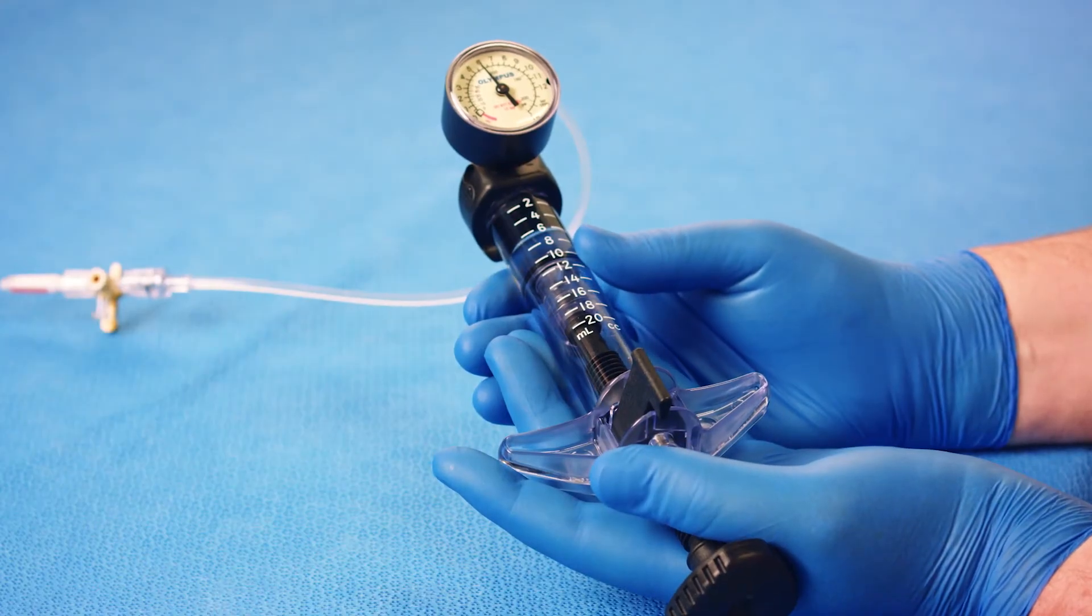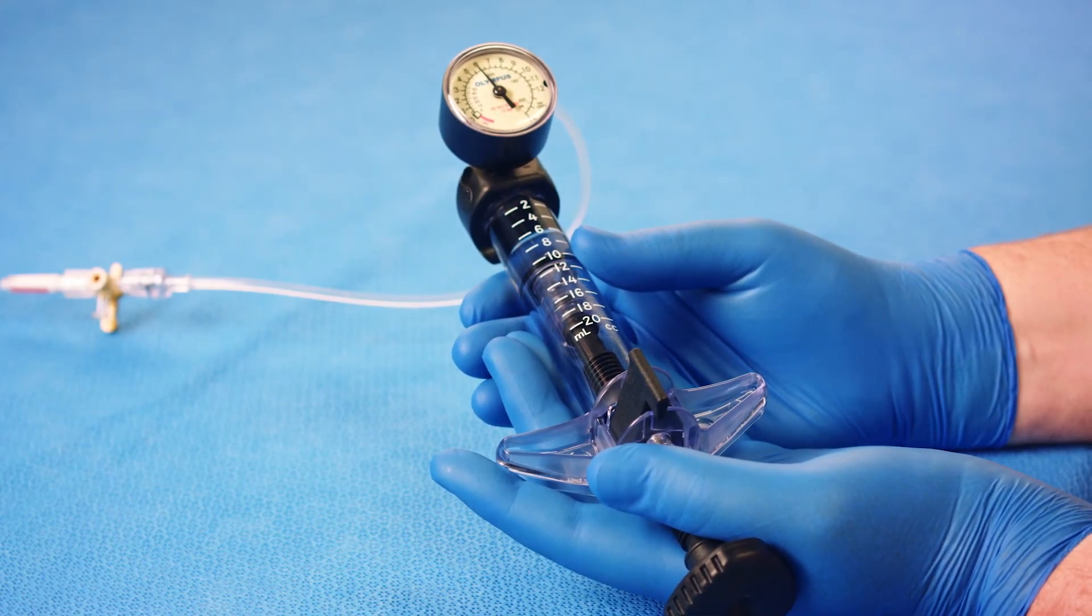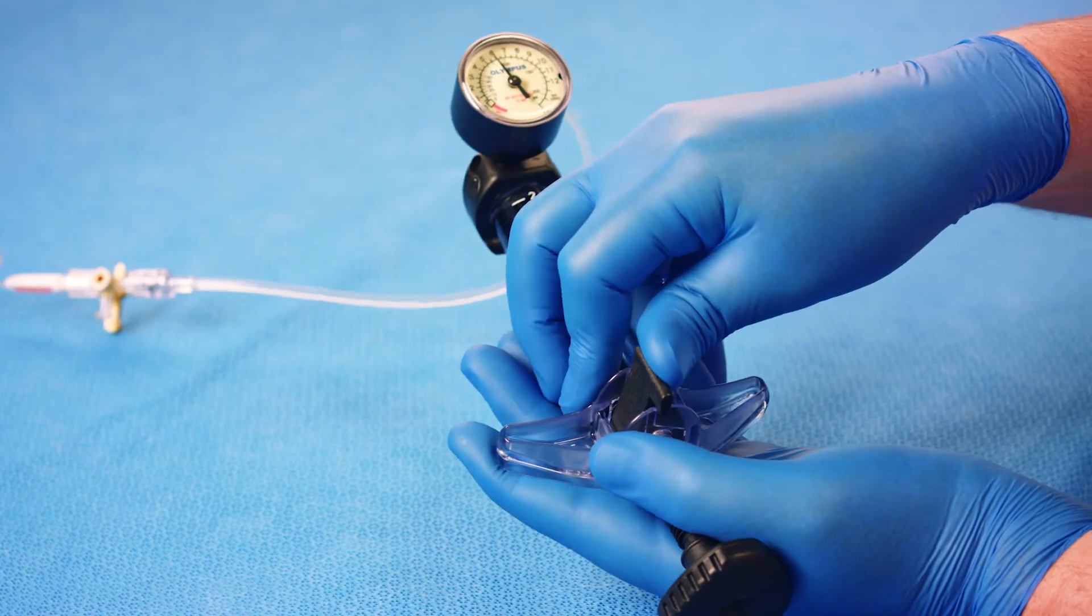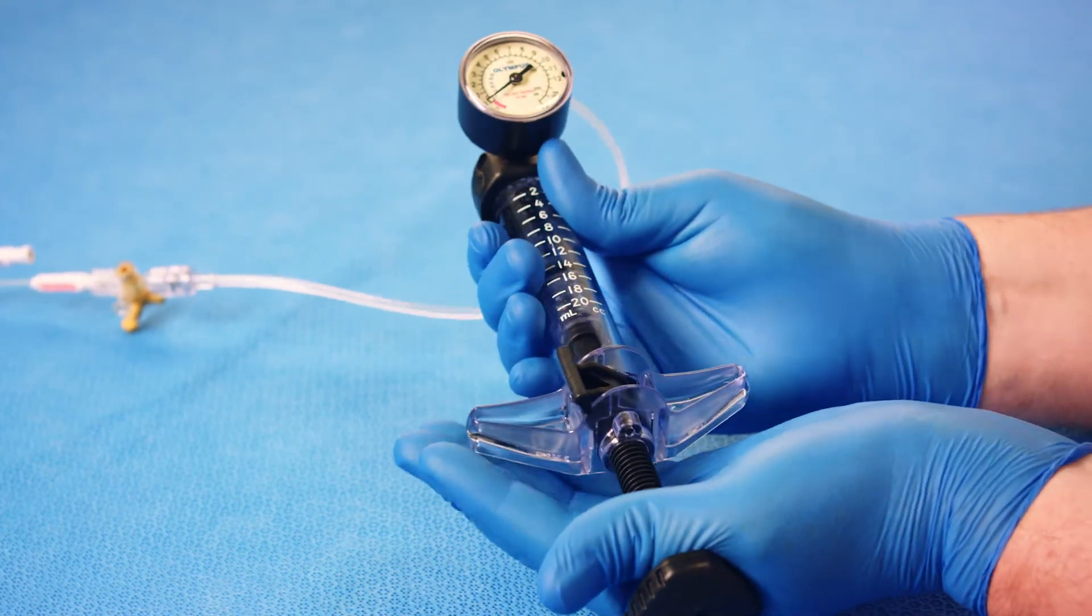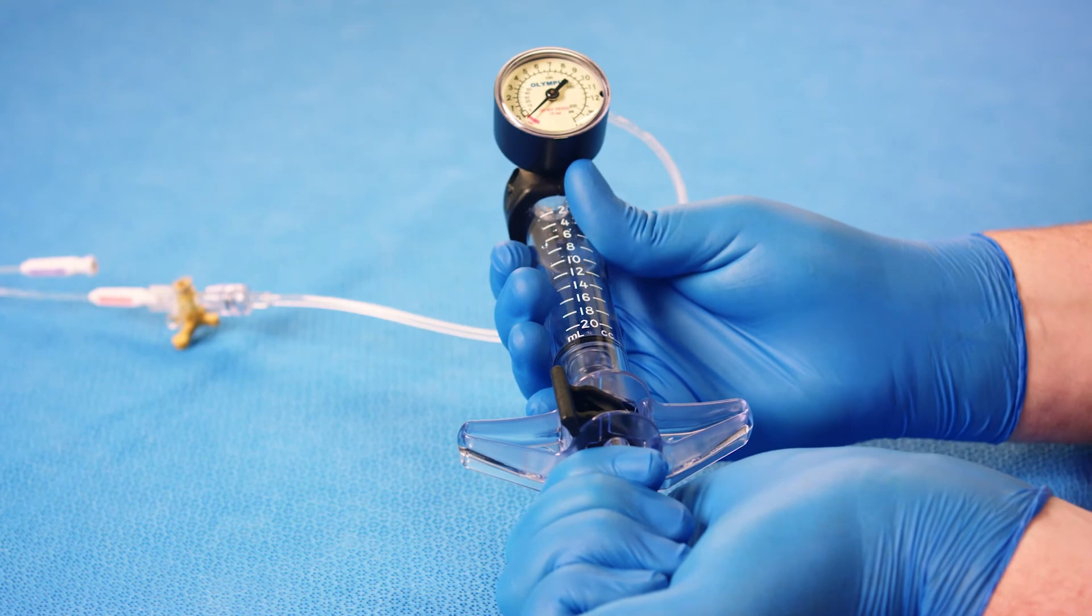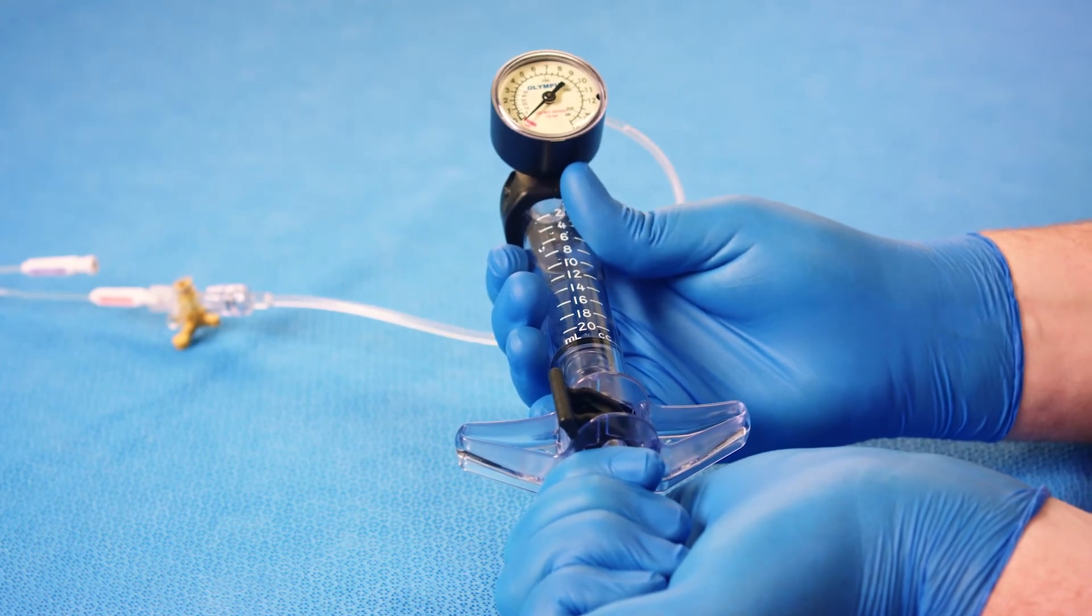Once dilation is complete, turn the locking switch back to the left position. Pull the plunger all of the way back, resting the end of the plunger against the side of your hand as shown here.